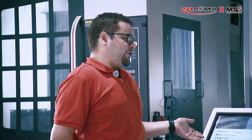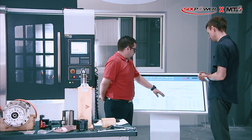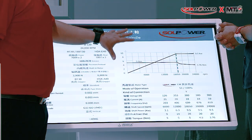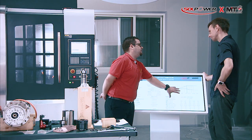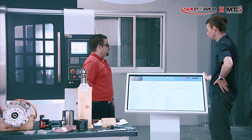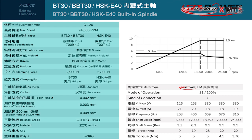We also have a spec sheet for the motor itself. You will never see this kind of motor specification for a motorized spindle from any other company — because we make the motor in-house. Even the torque, shaft power, and shaft speed can be customized according to the customer's requirements.